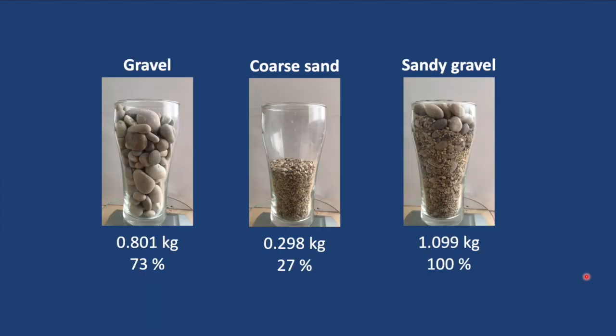The sample of sandy gravel in the pint glass has a net weight of 1.099 kilograms after we subtract the weight of the glass. Notice how the weight has increased quite a bit since we added the sand to the gravel — it's gone up from 0.8 of a kilogram to over 1 kilogram because of the addition of the sand.